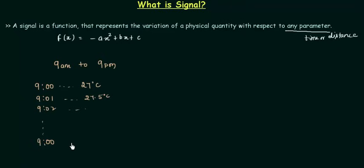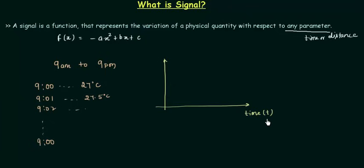We can plot this information. The x-axis is used for the independent quantity and the y-axis for the dependent quantity. In this case, the independent quantity is time — represented by small t — and this axis represents temperature, capital T. Since temperature is dependent on time, we write T(t). Let's say our origin is 6 AM, this point is 9 AM, and this one is 9 PM.